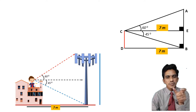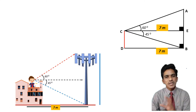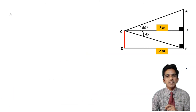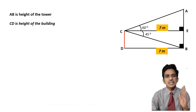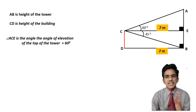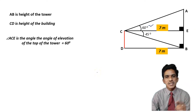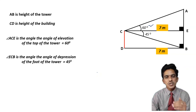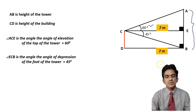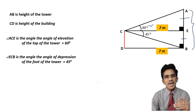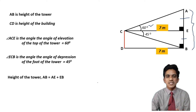Since DBCE is a rectangle, DB equals CE equals 7 meters. AB is divided into two parts: AE and EB. We have angle ACE as the angle of elevation of the top of the tower, equal to 60 degrees, and angle ECB as the angle of depression of the foot of the tower, equal to 45 degrees. We need to calculate AE and EB individually, then add them to find AB, the height of the tower.